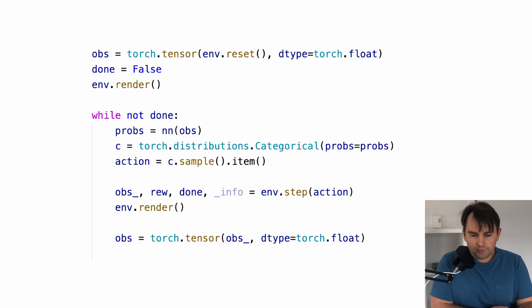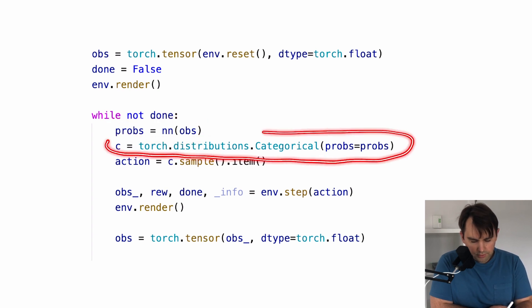Now let's train our neural network and see a demo of a trained version. Here is how we execute the trained policy. We get our initial observation, get the probabilities from our neural network, use it to build our distribution, sample our action, and then supply this action to our environment, and we render it.